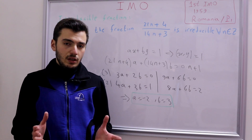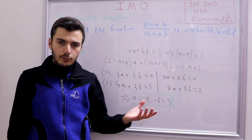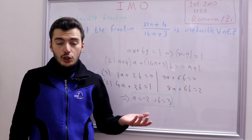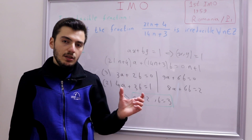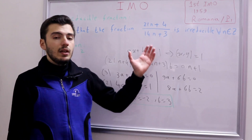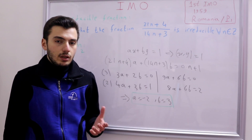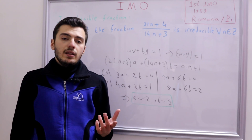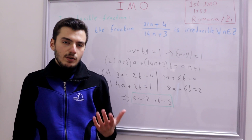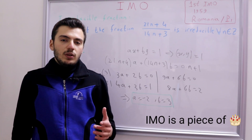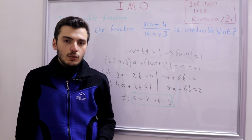As a quick summary: we were asked to show the fraction is irreducible, meaning the numerator and denominator are relatively prime with GCD = 1. We applied the property that GCD(a,b) = GCD(b, a−b) repeatedly and found GCD = 1. We also used Bezout's theorem — finding a and b with ax + by = 1. This problem was simple since it was the first IMO, but things will get harder as we progress.